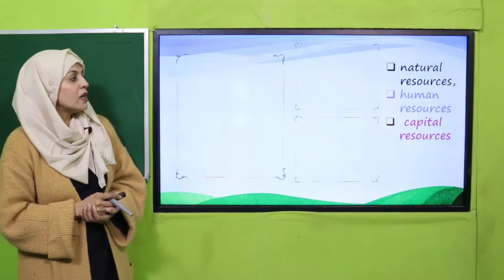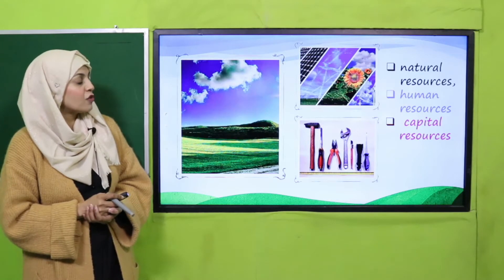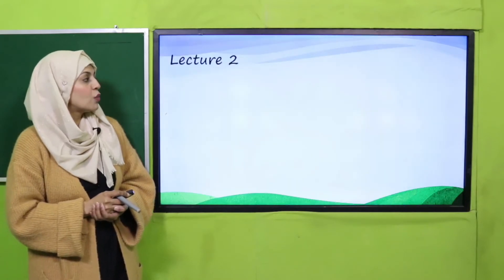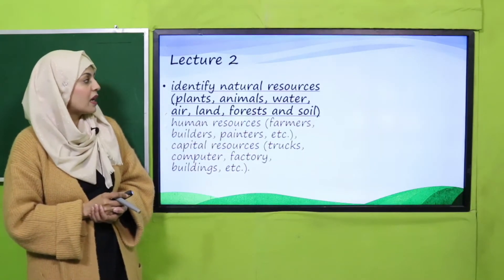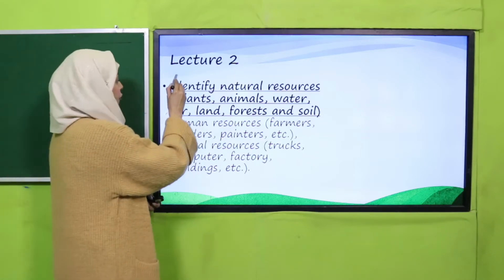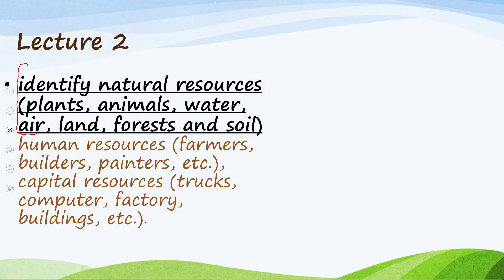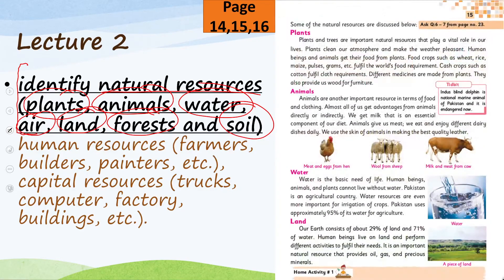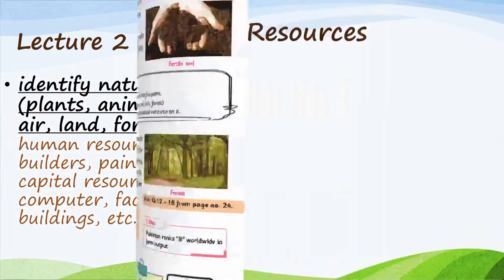Then we will move forward. You can see here: natural resources, human resources, and capital resources. We will move towards lecture number two. The objective covered here — students will be able to identify natural resources: what natural resources are, like plants, animals, water, air, land, forest, and soil. The pages included are page number 14, 15, and 16.